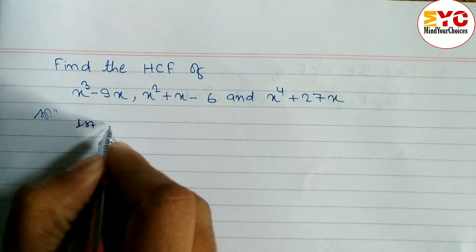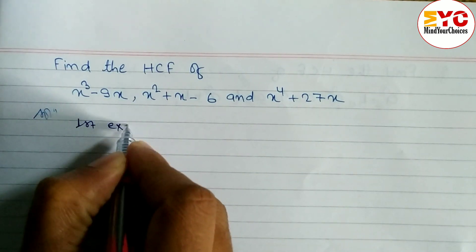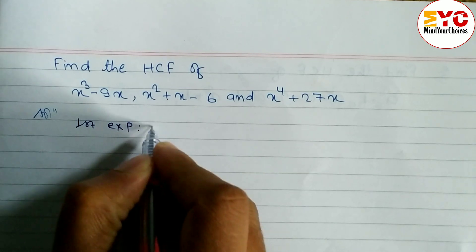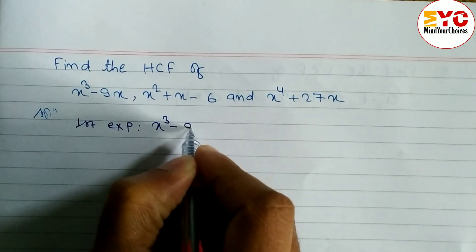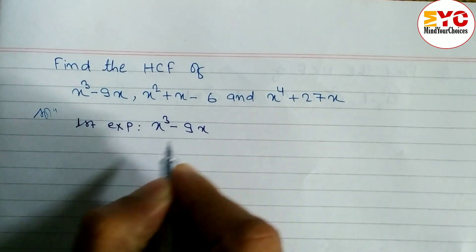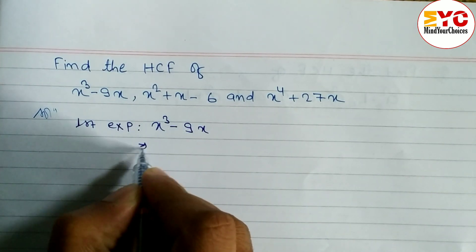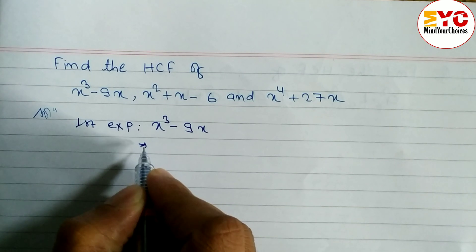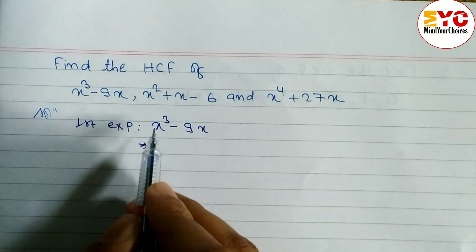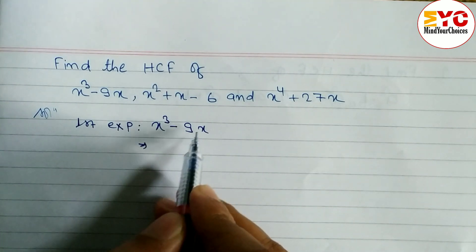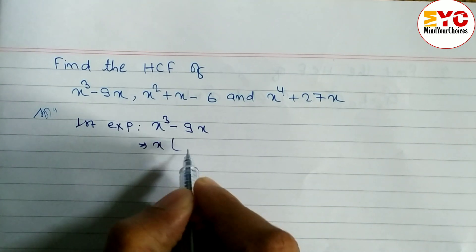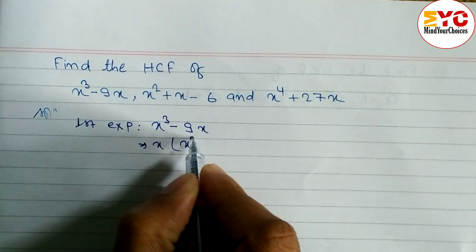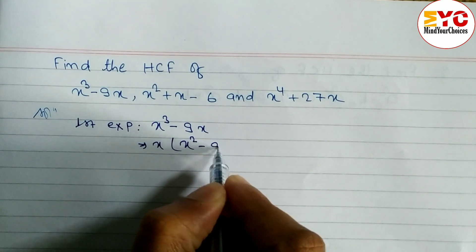So what is the first expression here? It is x cube minus nine x. In factorization, what we have to do? First of all we have to take common — here is x cube, here is x. So we have to write x and the remaining is x square minus nine.